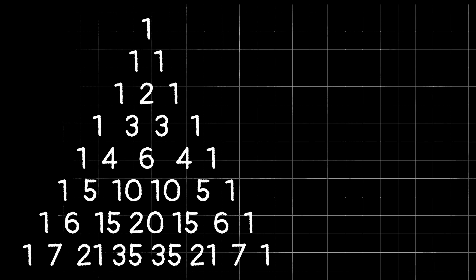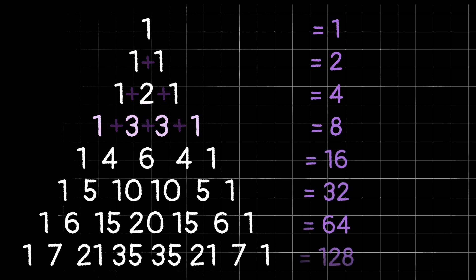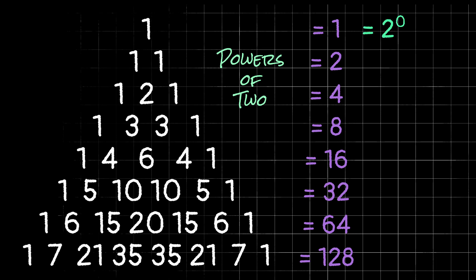Next, I want to look at the horizontal rows within this triangle and add each of the numbers in each row. The first row we just have one. The second row, one plus one, which is two. Third row, one plus two plus one, which is four. Fourth row, one plus three plus three plus one, which is eight, and so on. Notice that all of these numbers are powers of two: one is two to the zero, two is two to the first, four is two squared, and so on.